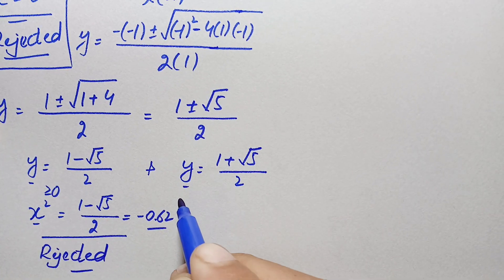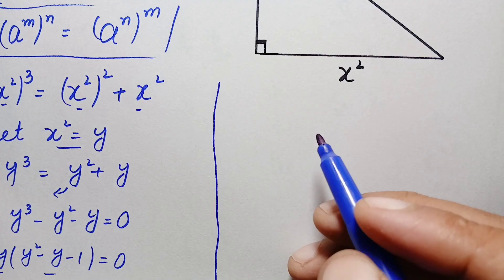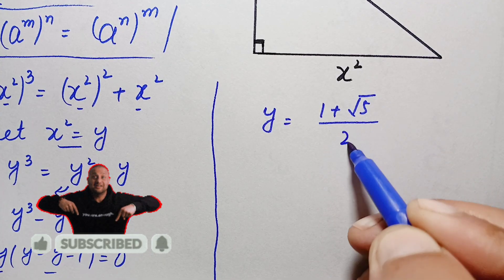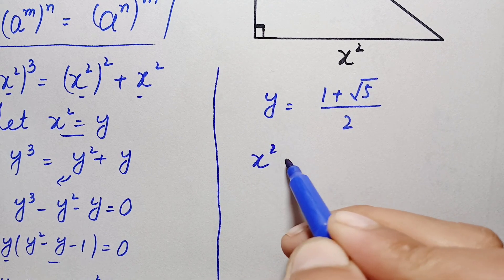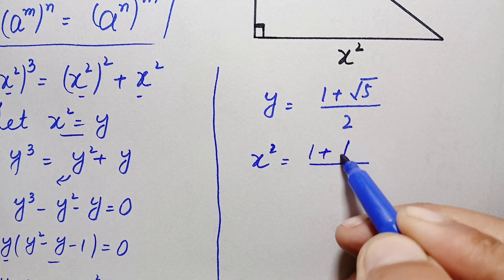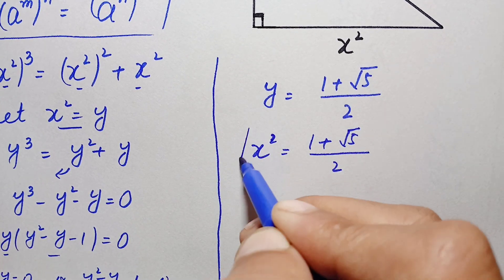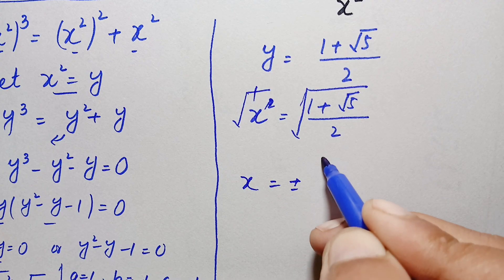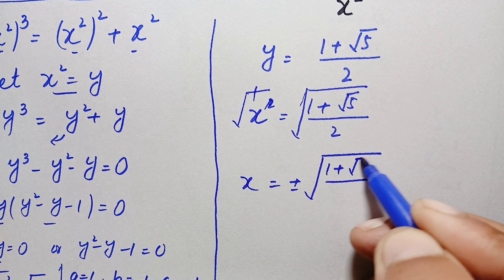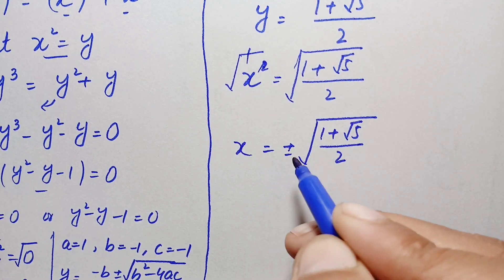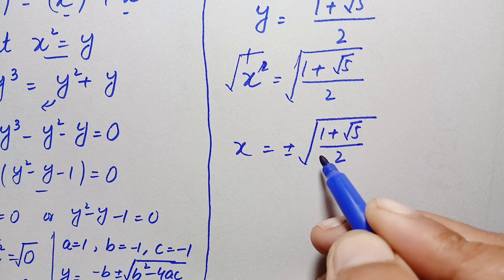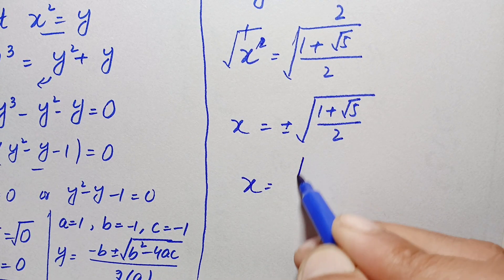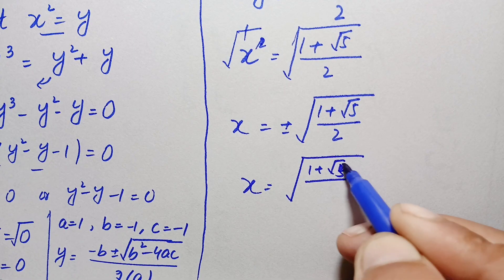We now solve using the second value: y = (1 + √5)/2. Replacing y with x², we get x² = (1 + √5)/2. Taking the square root on both sides to eliminate the square: x = ± √[(1 + √5)/2]. We reject the negative value because x represents the side length of a triangle, which cannot be negative. Therefore, x = √[(1 + √5)/2].